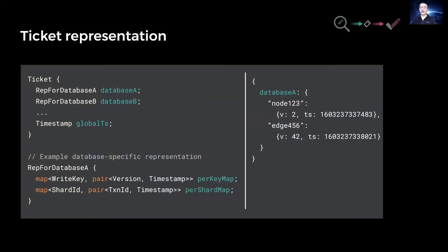This is what the schema of tickets looks like. On the right, we have the JSON printout of a ticket. The concrete details don't really matter, but the important point is that the representation can be database-specific — database A's metadata format does not need to be the same as database B's. It can also be of different granularity, from per-object to global. When an individual database generates a ticket on a write, it would only contain metadata from that database, but joined tickets can contain multiple writes or writes from multiple databases.